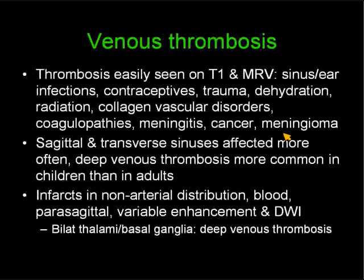There are certain predisposing factors: sinus and ear infections; contraceptives, particularly in younger females who take oral contraceptives and smoke; trauma; dehydration, which is particularly important in children and babies; radiation; collagen vascular disorders; coagulopathies; meningitis; and cancer — many cancers are hypercoagulable states, and at end stage patients may not be eating or drinking well, leading to cerebral thrombosis. Also meningioma, when it extends into and invades a sinus. The sinuses most commonly affected are the sagittal and transverse sinus. The deep venous system may be affected more commonly in children than adults, but may also occur in adults. With accompanying thrombosis of cortical veins, we will have infarcts in non-arterial distributions, which may be hemorrhagic and tend to be parasagittal.